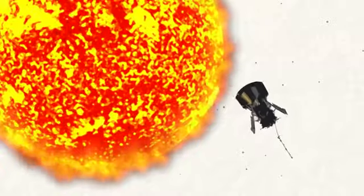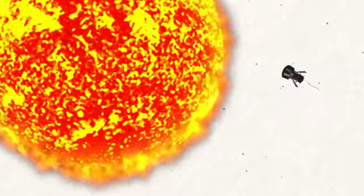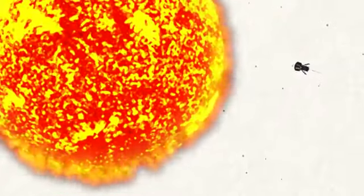NASA's Parker Solar Probe will soon fly closer to the Sun than any spacecraft before it, about 4 million miles from the visible surface. But getting that close to the Sun requires some fancy orbital mechanics.